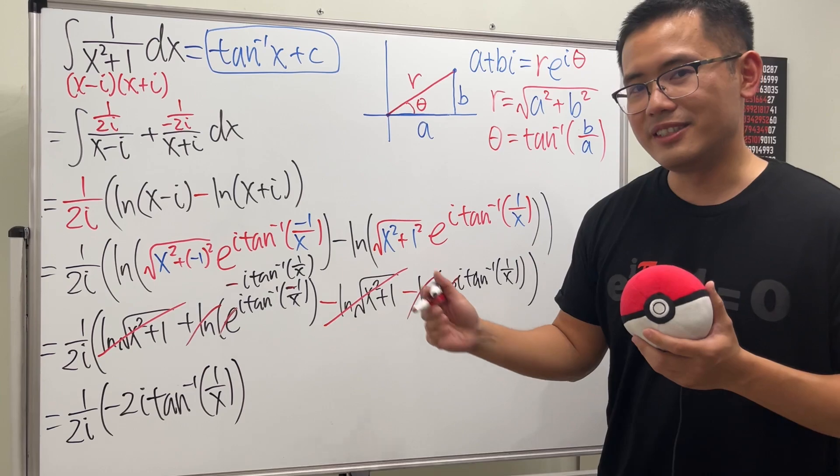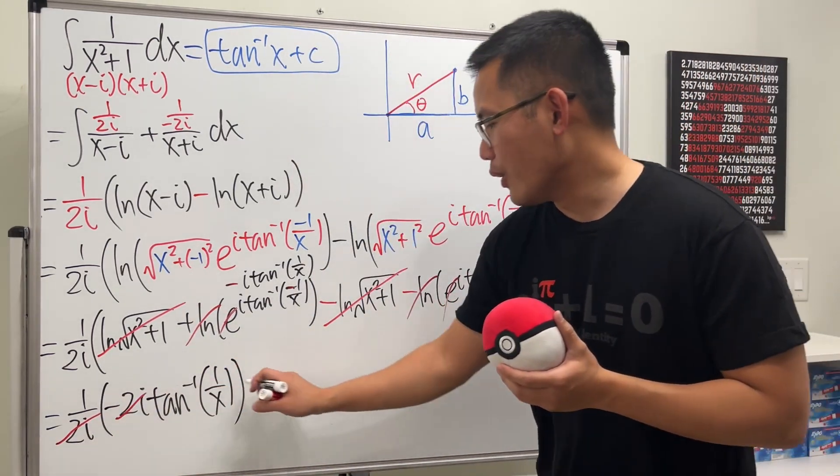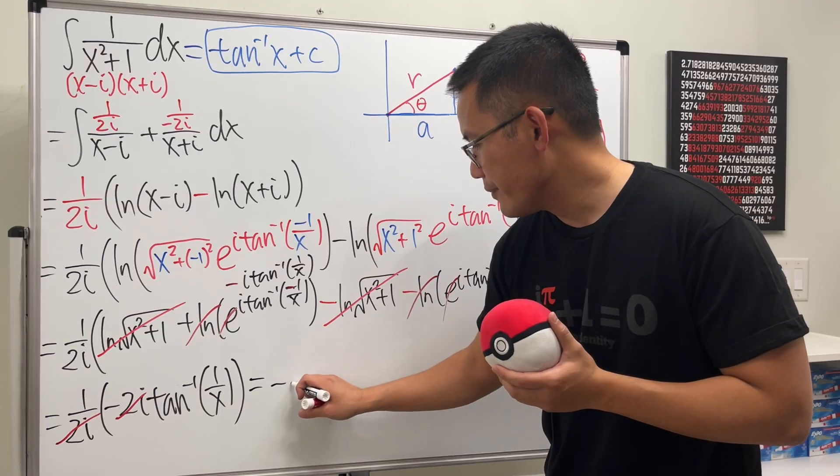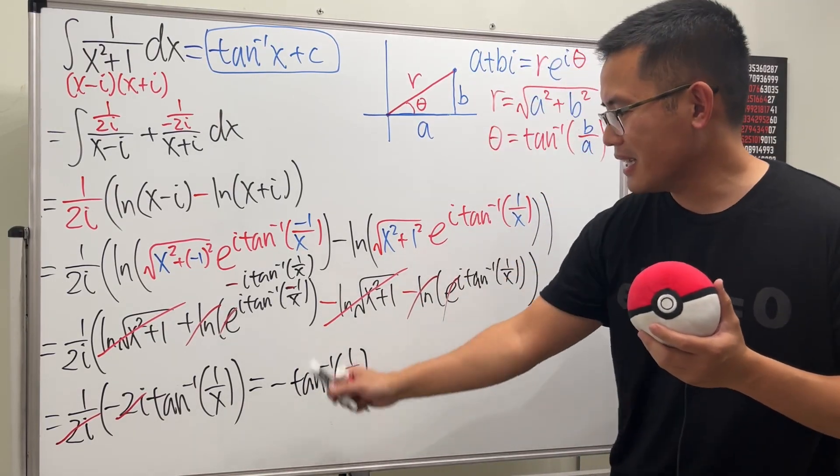Very nice. And now, ladies and gentlemen, 2i, 2i, cancel. So all in all, we just get negative inverse tangent of 1 over x. And then we are done.